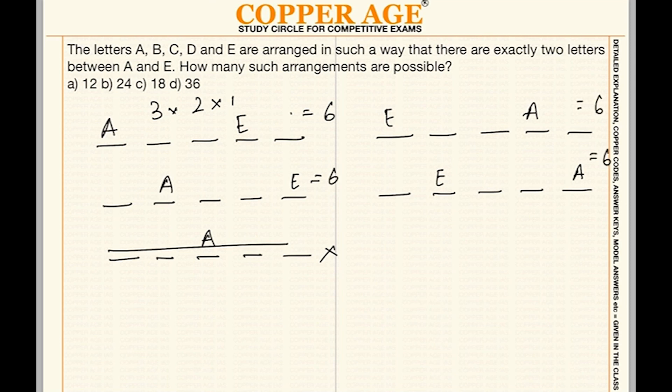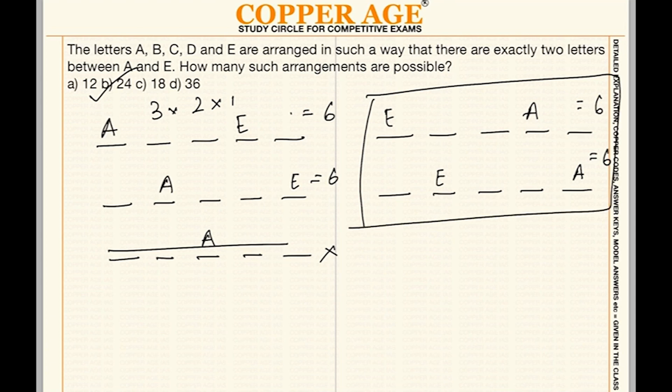So the final answer is six arrangements multiplied by four sets, giving twenty-four total arrangements. Note that a common mistake is selecting the wrong option; make sure to account for all possibilities carefully in your notebook.